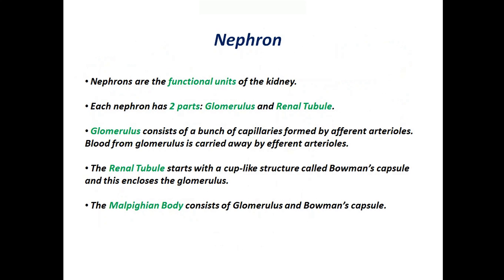Let's study about the nephron. Nephrons are the functional units of the kidney. Each nephron has two parts: glomerulus and renal tubule. Glomerulus consists of a bunch of capillaries formed by afferent arterioles. Blood from glomerulus is carried away by efferent arterioles. The renal tubule starts with a cup-like structure called Bowman's capsule, and this encloses the glomerulus. The malpighian body consists of glomerulus and Bowman's capsule. Please try to relate all these things with the diagram in the previous slide.